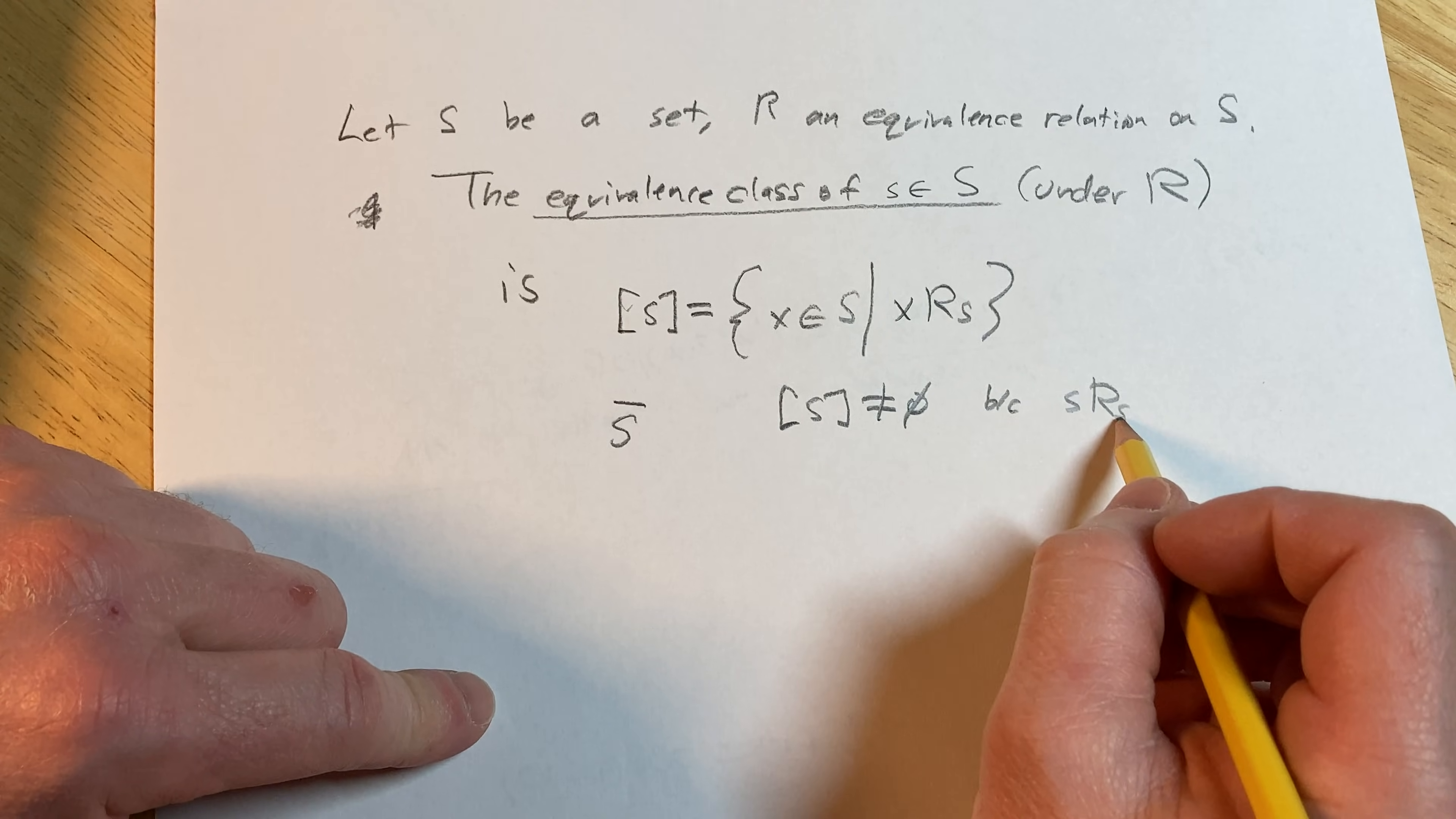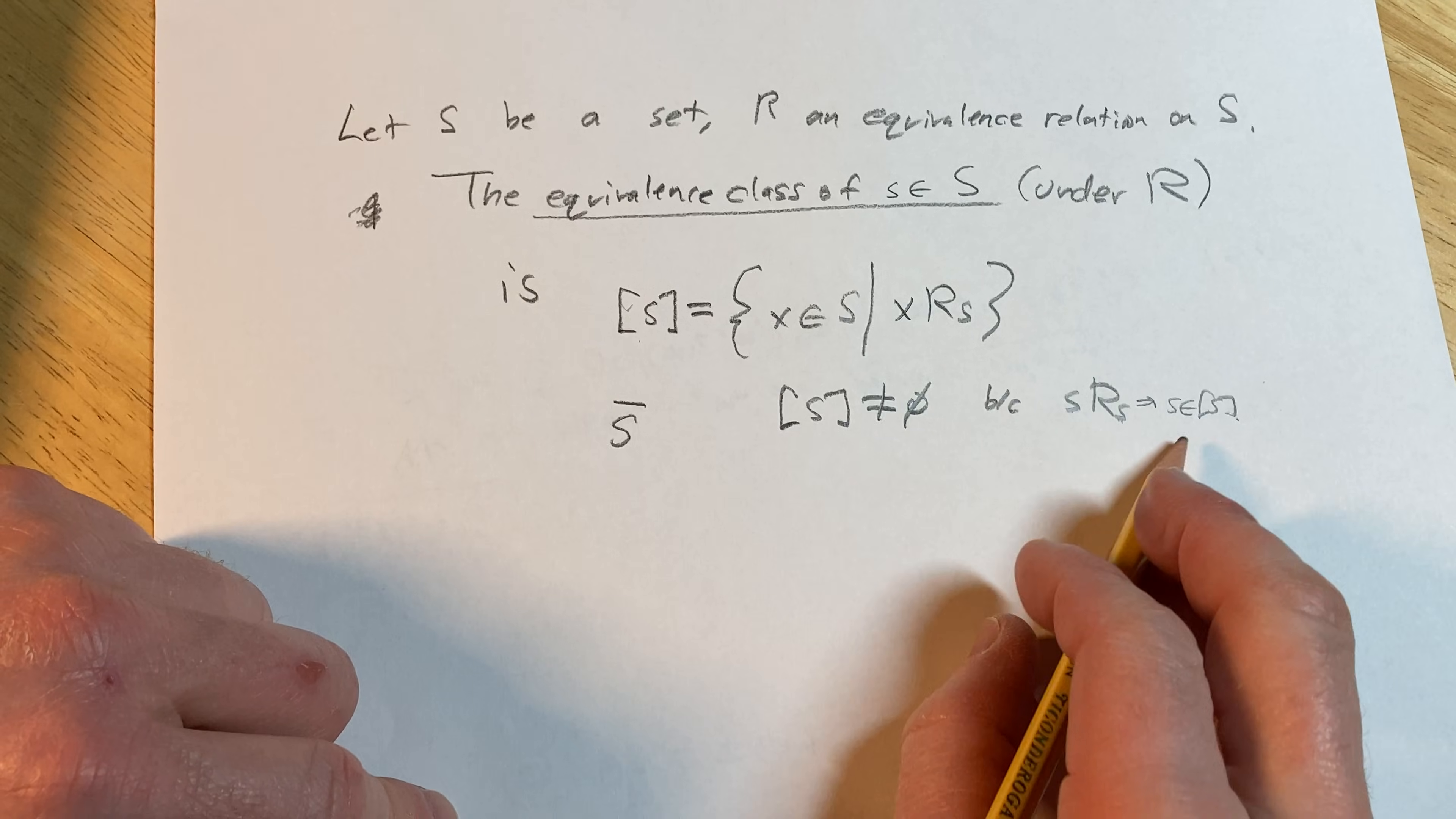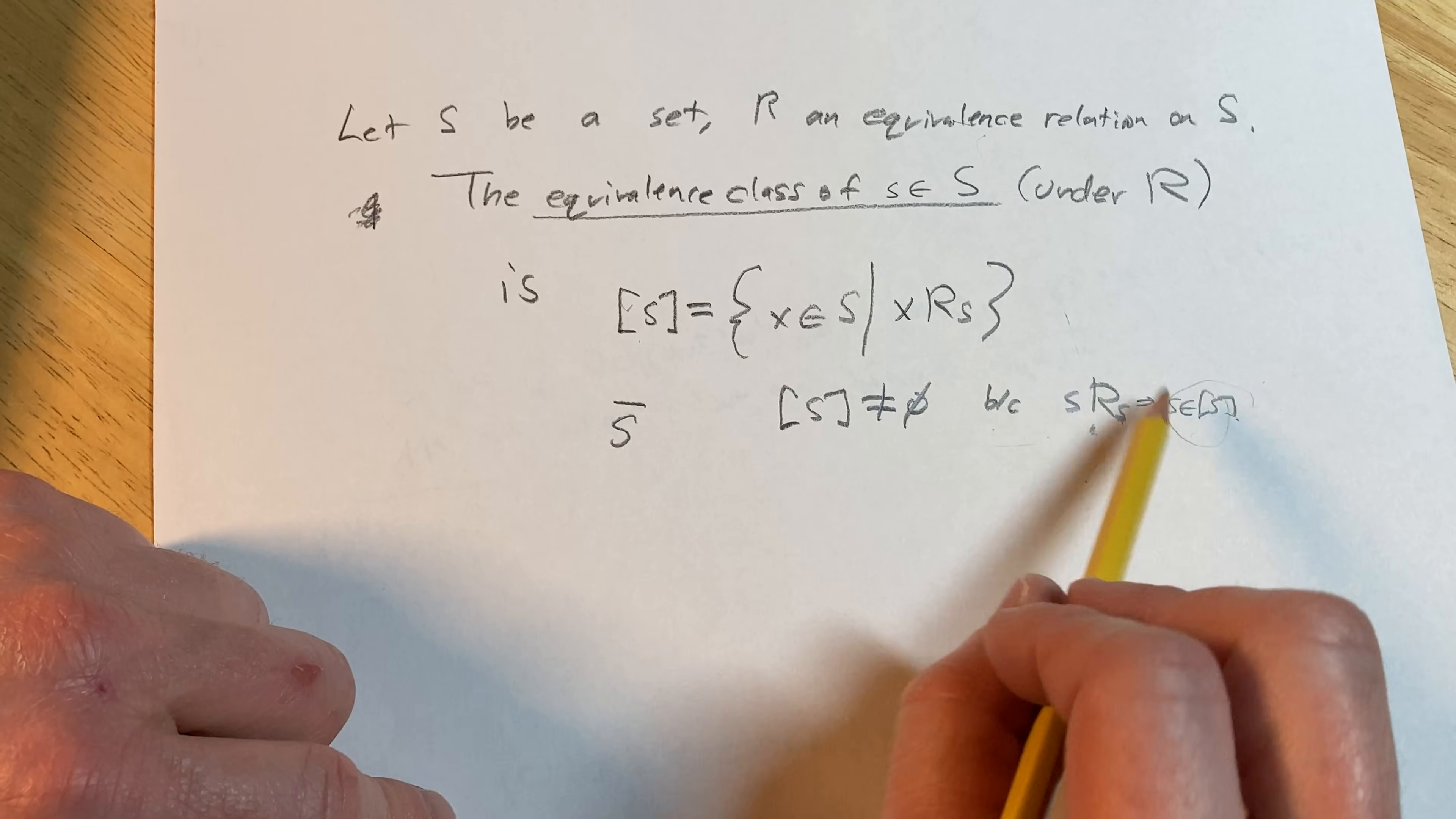And what does that mean? That means little s is in the equivalence class, so it's non-empty. This is by reflexivity, which is true because R is an equivalence relation and therefore reflexive. So little s is in the class by reflexivity, meaning it's not empty.